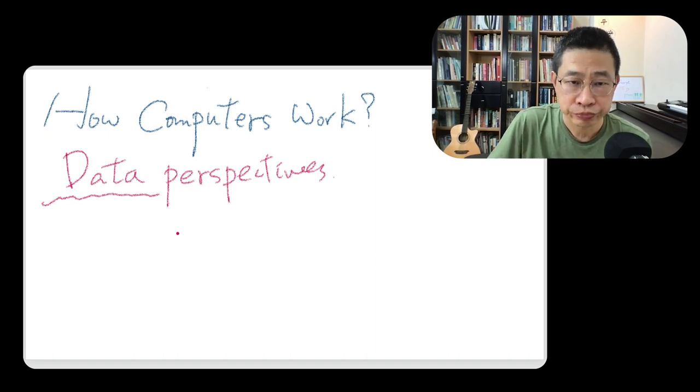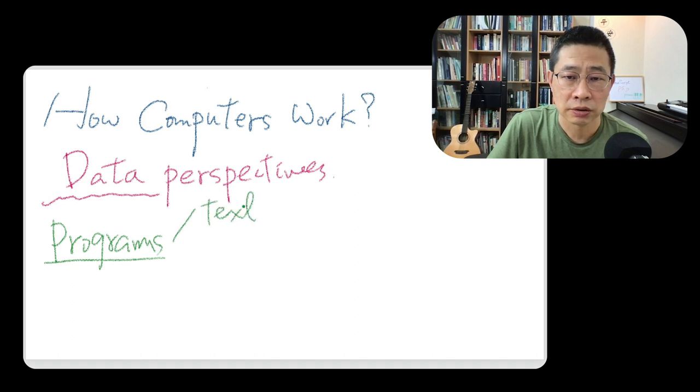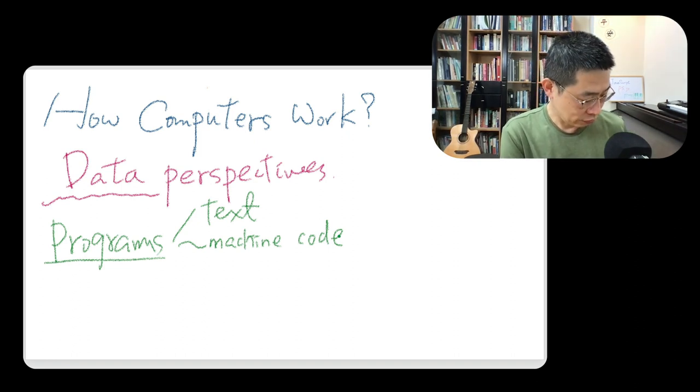For example, when we talk about a program, when you develop a program, you use a text, right? And, but the machine can only run your code in machine code. Sorry, I'm going to turn my phone, keep it silent.